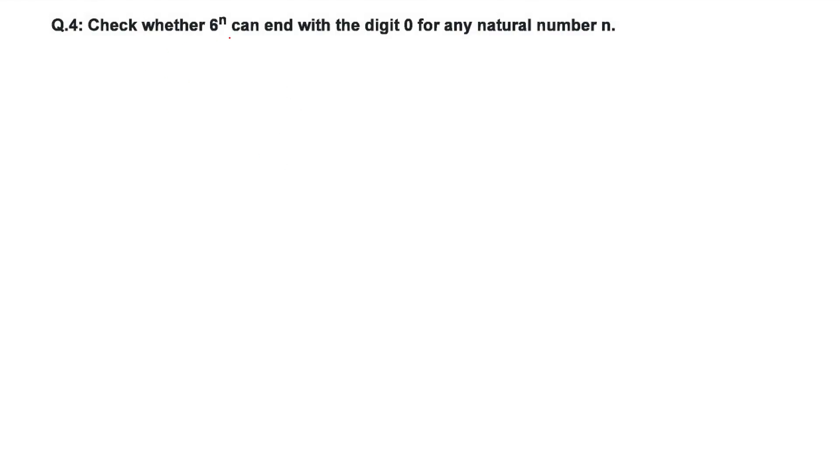Check whether 6 to the power n can end with a digit 0 for any natural number n. So any number which ends with 0, that means say 50. 50 has come from 5 into 10. And 10 is what? 5 into 5 into 2. So you ought to have this 5 into 2.